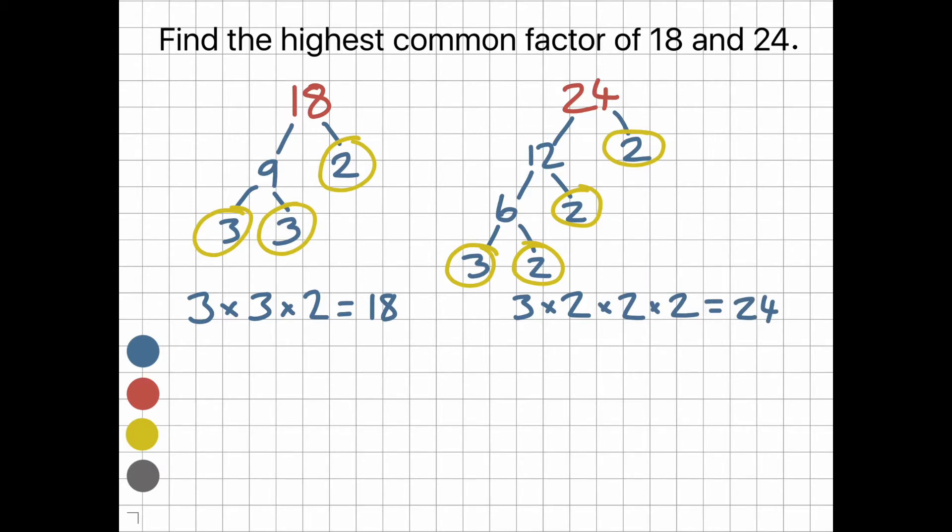Now let's find the highest common factor. To do this, we need to multiply the prime numbers that are in both. They both have one 3 and one 2. 3 times 2 is 6, so the highest common factor is 6.